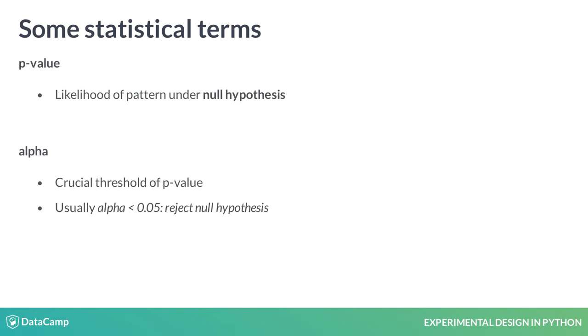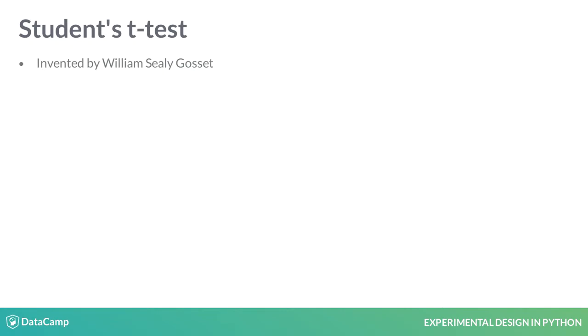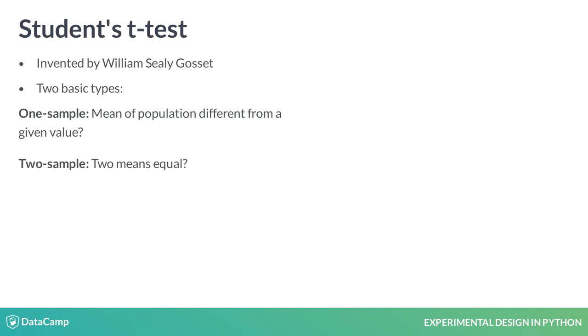To compare two sets of values for a continuous variable, we will use Student's t-test. This test was invented by William Sealy Gosset as a means of monitoring beer quality for Guinness. A noble endeavor, to be sure. There are two basic types. A one-sample t-test will test the likelihood that the mean of a population is different from a given value. A two-sample t-test will test the likelihood that there is a difference between the means of two populations.